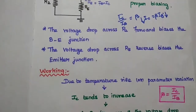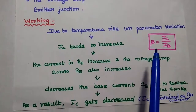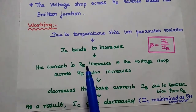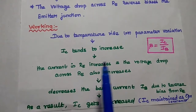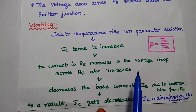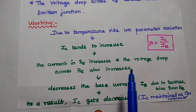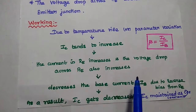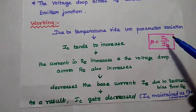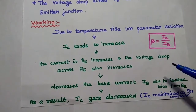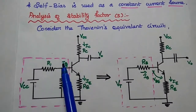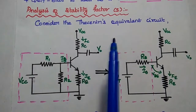Due to temperature rise or parameter variation, IC tends to increase. If the collector current increases, then the current through RE is also getting increased, so the voltage drop across RE also increases. It will increase the reverse bias to the base-emitter junction. If it gives reverse bias to the base-emitter junction, the base current is getting decreased. If it is decreased, the collector current is also getting decreased, and we can maintain the collector current as a constant. It can be used as a constant current source. Next, we are going to analyze the stability factor for this voltage divider bias.